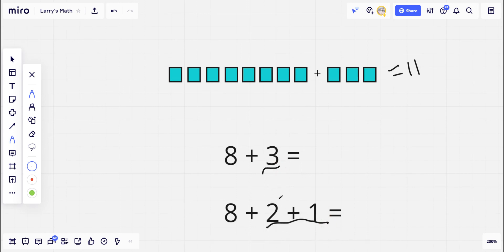But I also know that 8 plus 2 is 10—that's automatic for me. So really, 8 plus 3, I can think of as 8 plus 2 plus 1, which is 10 plus 1, or 11. And that makes it a little bit easier for me.